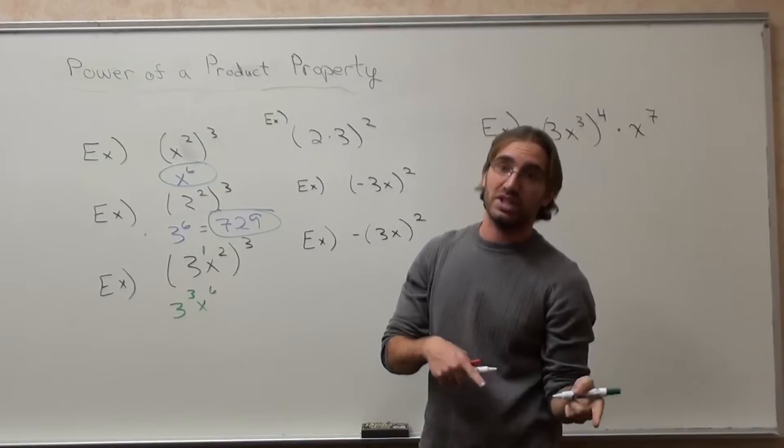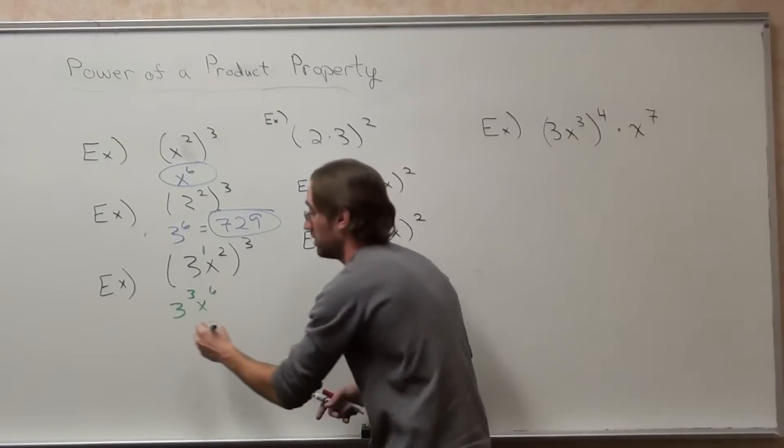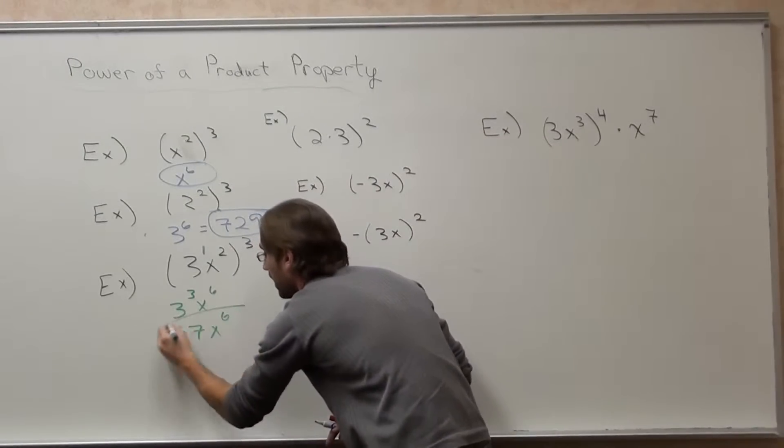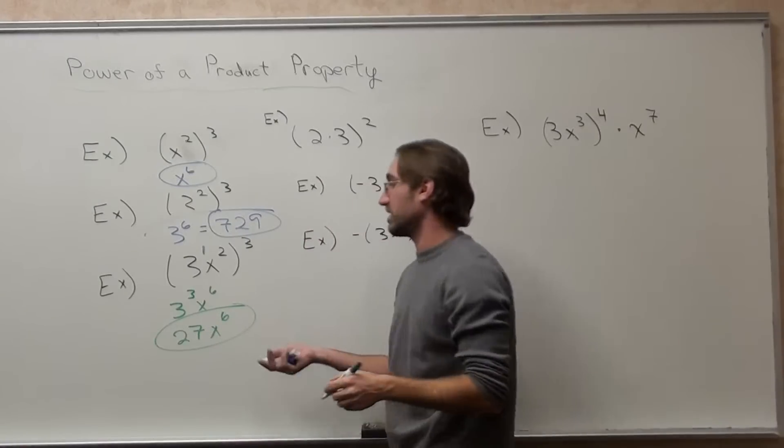3 to the third is not 9, it's 27. And a lot of students still put that down though. x to the sixth. 27x to the sixth is the answer.